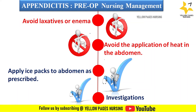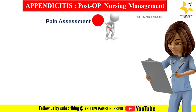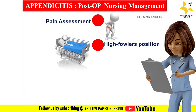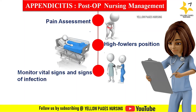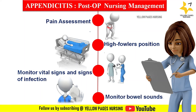In post-operative nursing management, first assess the location, characteristics, and severity of pain. Provide high Fowler's position for the patient — this reduces tension on the incision and abdominal organs, helping to reduce pain. Monitor vital signs and signs of infection.